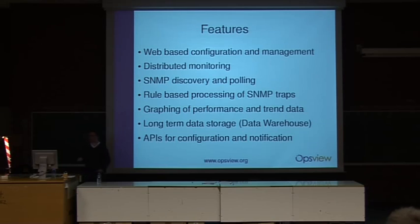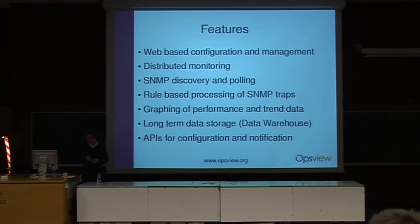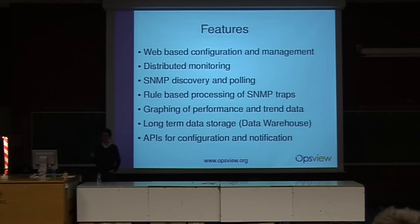We have SNMP discovery and polling — SNMP being the most widely used protocol for monitoring and managing network devices. In OpsView we do a certain amount of discovery, poll network devices, and pull information out of them. We also have SNMP trap processing, where network devices push information to the monitoring system. We take those traps, aggregate them, and based on a set of rules decide what to do — for example, raising a warning alert and sending it out to network admins. We also have graphing of performance and trend data, so you can see CPU load or storage utilization over time, and we have a long-term data warehouse for analysis and report generation.